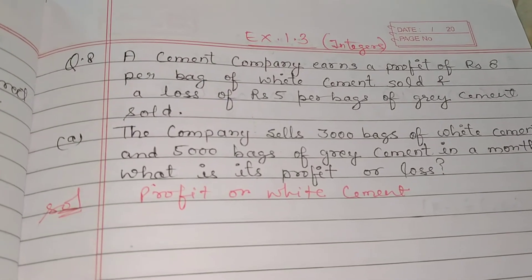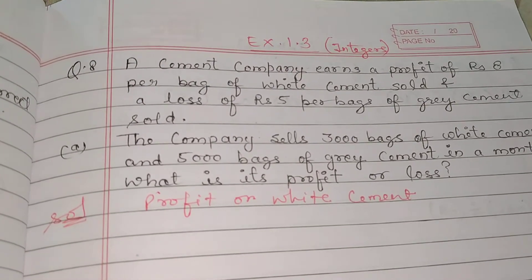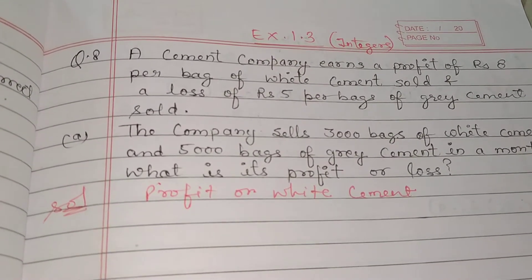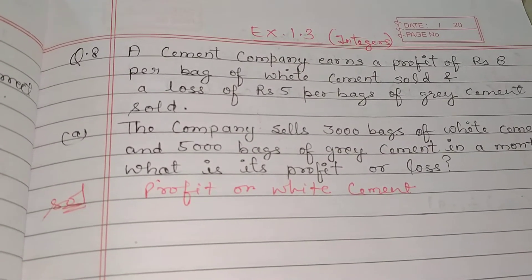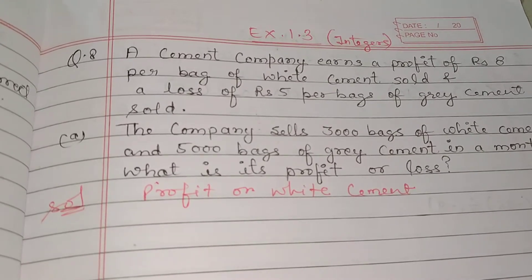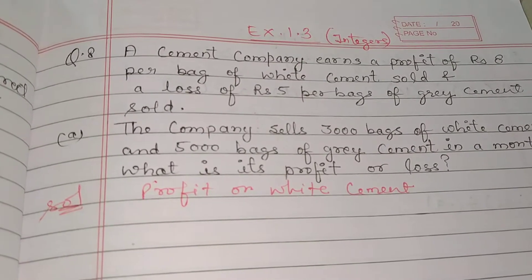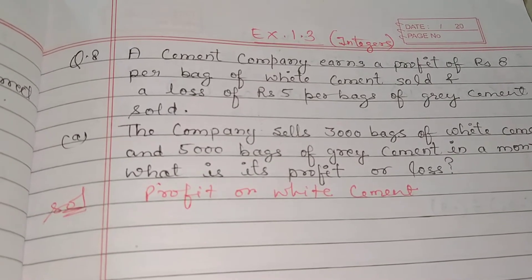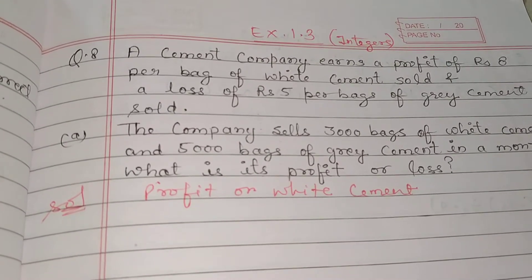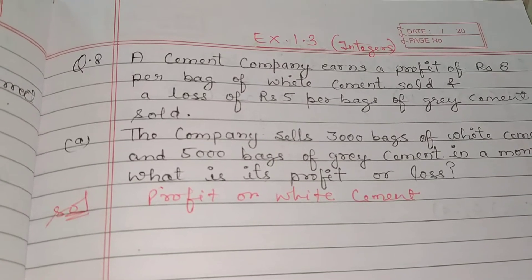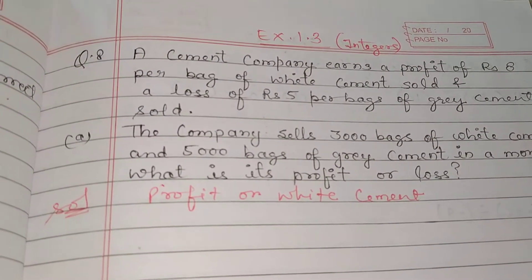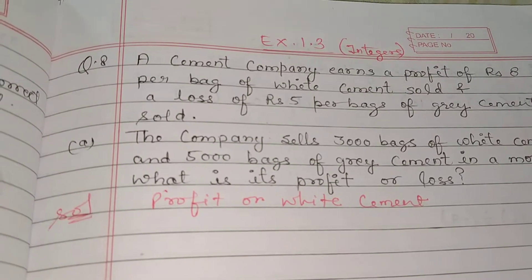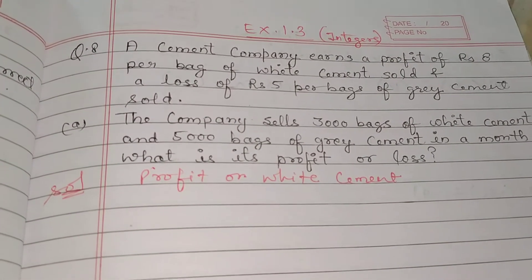Hello students of class 7th. In this video we will solve question number 8 of exercise 1.3. The question says: a cement company earns a profit of rupees 8 per bag of white cement sold and a loss of rupees 5 per bag of grey cement sold.